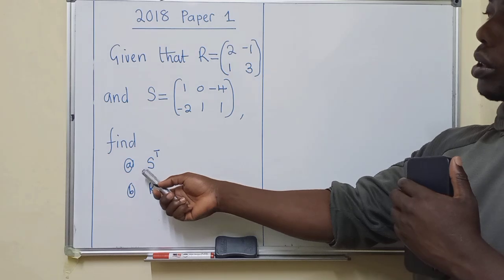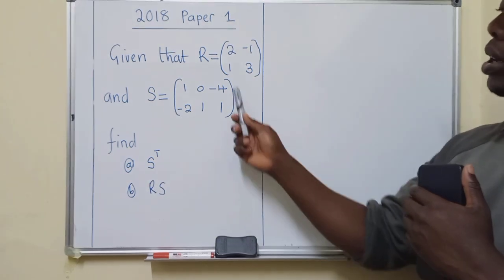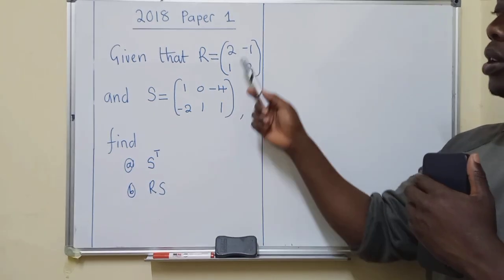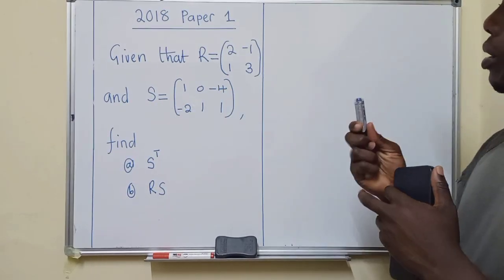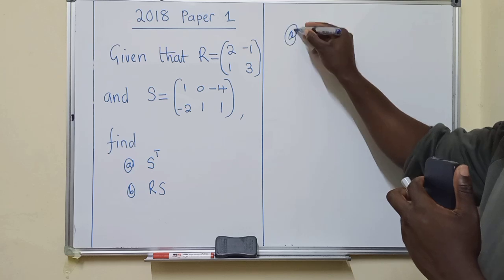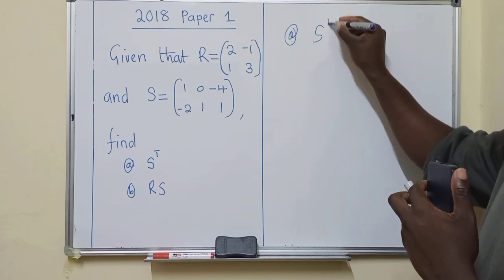So for the first question they want us to find the transpose of S. We've got two of these matrices, we've got R and S. So the transpose of S, so we say S transpose.